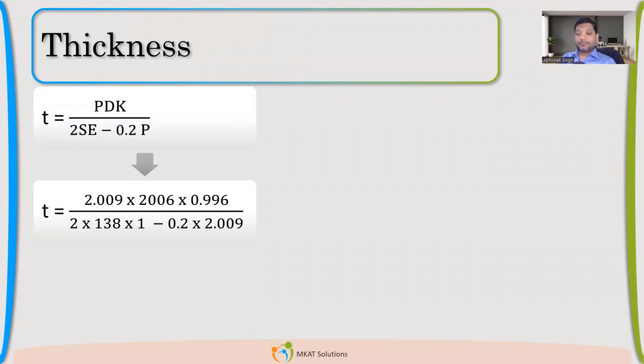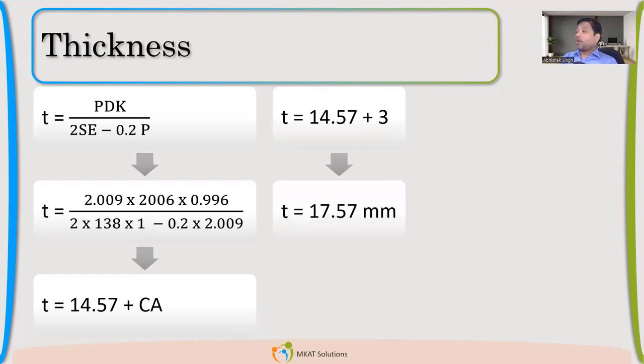Now I can use 0.996 and do the thickness calculation. Hope you guys are following it. If any issue is there, let me know. A simple calculation. Wherever something new is there, I'm just explaining. So thickness which I've got is 14.57. That will be the minimum required thickness even before adding the corrosion allowance. So the next step will be to add the corrosion allowance and get the minimum design thickness. So we have got minimum design thickness as 17.57.